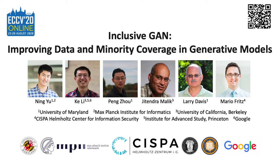We introduce the first study of minority inclusion in generative models. We formalize the task of minority inclusion as improving mode coverage in general, with a specific focus on minority subgroups. We present Inclusive GAN, a simple yet effective pipeline to improve data and minority coverage by harmonizing between adversarial training and reconstructive generation.